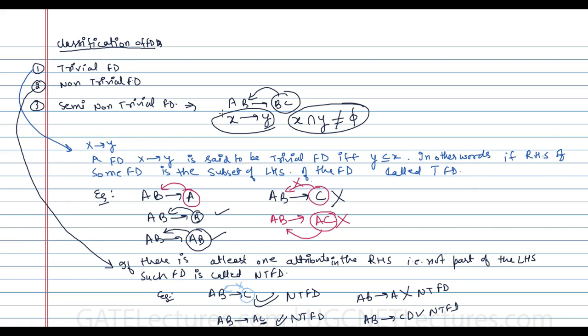Now let us look at some of the closure properties, also called inference rules or Armstrong axioms, in case of functional dependencies.